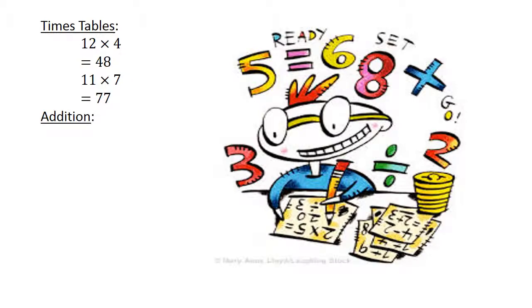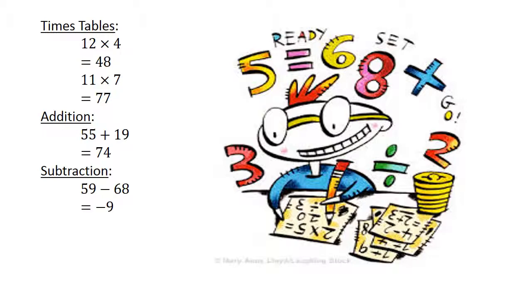Addition: 55 plus 19 equals 74. Subtraction: 59 minus 68 equals negative 9.